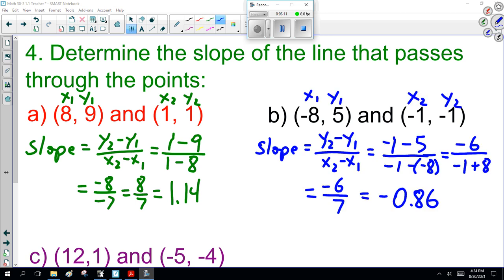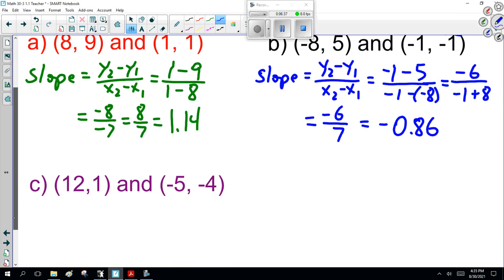For the second one, x1 is -8, y1 is 5, x2 is -1, y2 is -1. Plugging the numbers in: minus 1 minus 5 is minus 6. x2 minus x1 is minus 1 minus minus 8, or minus 1 plus 8. I got minus 6 over 7, or -0.86. Either answer is perfectly correct. Just be careful if you get a multiple choice question on the test.